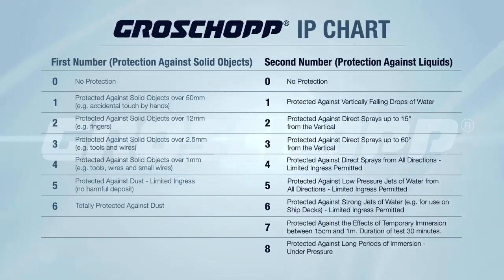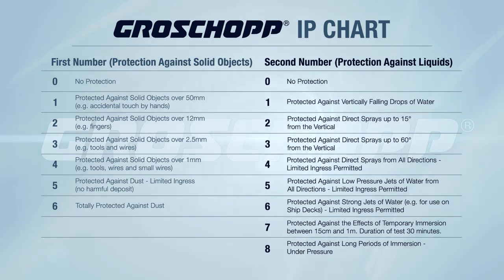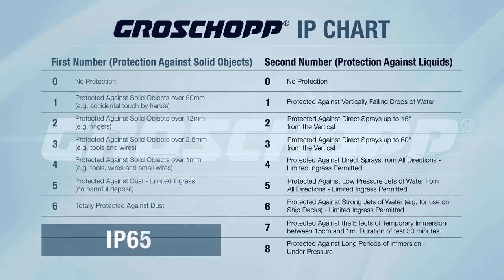We have two reference tools to help you with these environmental specifications. The first is our ingress protection chart, or IP for short — we've included a link to it in the description. IP ratings are used to provide an industry-wide understanding of a motor's protection against dust and water. For example, a motor rated IP 65 would be considered dust-tight and splash-proof.